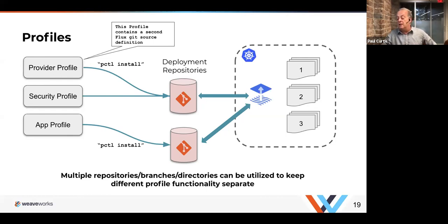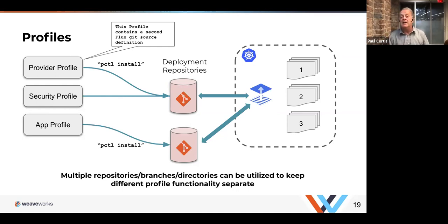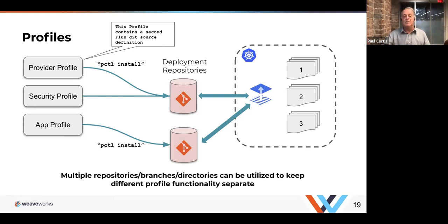Another advantage: if you have 10 clusters and want to try out a profile on only one, you can target the profile to a specific cluster. This becomes powerful when deploying across regions or data centers. Profiles are declarative — like everything in Weave's world, everything is GitOps. Profiles are declared, maintained in Git, and therefore versioned. All the same GitOps principles that apply to any other Kubernetes objects apply to profiles.